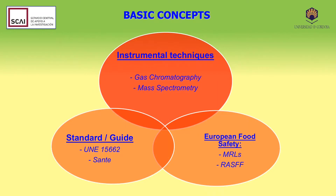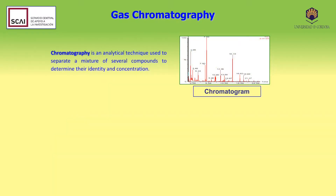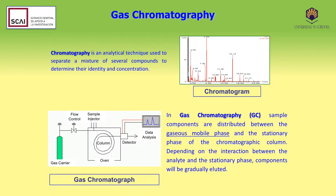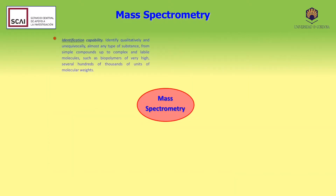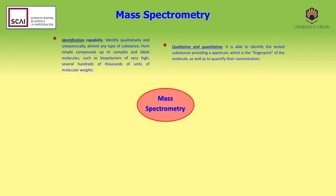Before proceeding to the analytical assay, we will explain some basic concepts necessary for a better understanding. Chromatography is an analytical technique in which chemical compounds are separated to determine their identity and concentration. In the case of gas chromatography, or GC, the compounds are separated in the gaseous phase. Mass spectrometry, or mass spec, is nowadays the most complete analytical technique, characterised by its identification capacity. It can be used for both qualitative and quantitative analysis.